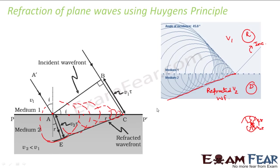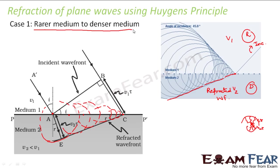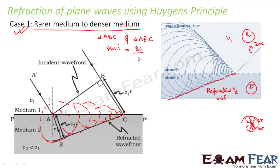When we say refraction can be explained using Huygens principle, that means we can also derive Snell's law. Please remember that here we are considering rarer medium to denser medium. If you look at this diagram and consider triangle ABC and triangle AEC, we can say that sin I — in triangle ABC — is perpendicular by hypotenuse. The perpendicular is BC and the hypotenuse is AC. So this will be equal to BC by AC.